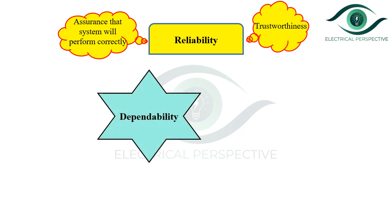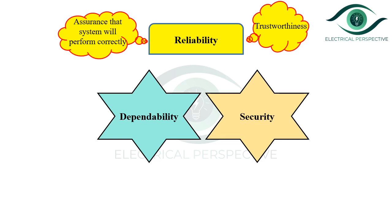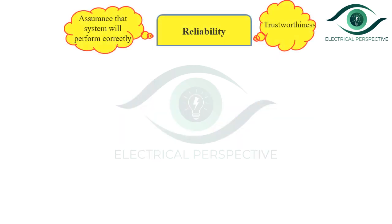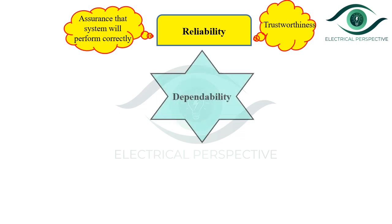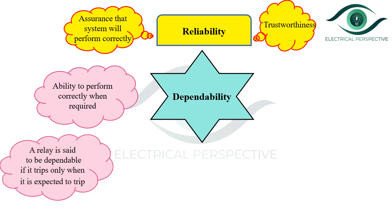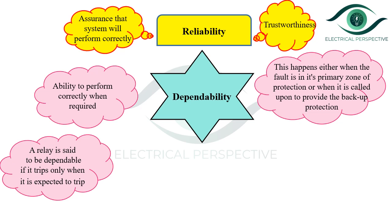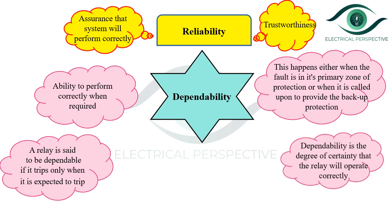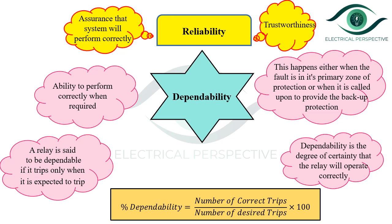There are two aspects of reliability. The first is dependability: the ability to perform correctly when required. A relay is said to be dependable if it trips only when expected to — either when a fault is in its primary zone of protection or when called upon for backup protection. Dependability is the degree of certainty that the relay will operate correctly. Percentage dependability = (number of correct trips ÷ number of desired trips) × 100. Dependability can be improved by increasing the sensitivity of the relaying system.